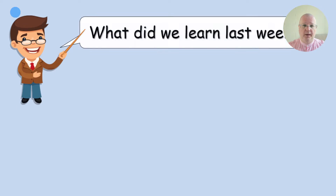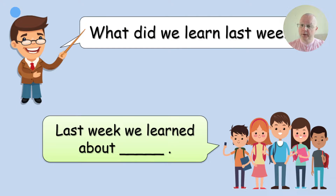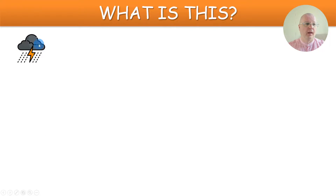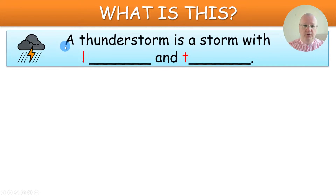The first thing you want to ask your students is: what did we learn last week? They need to reply: last week we learned about four natural disasters. Then elicit from your students — they need to tell you that this is a thunderstorm and then give you a definition: a thunderstorm is a storm with lightning and thunder.